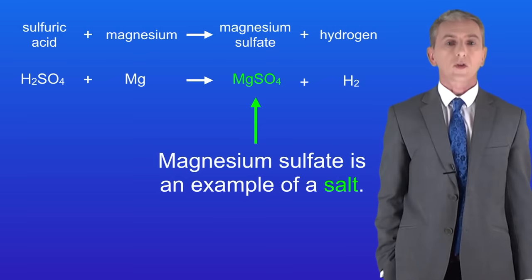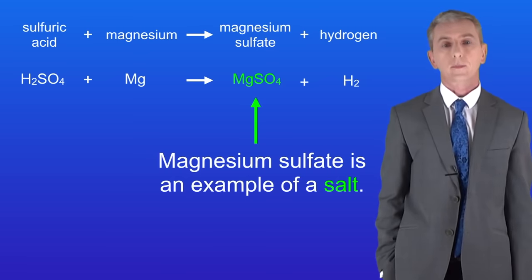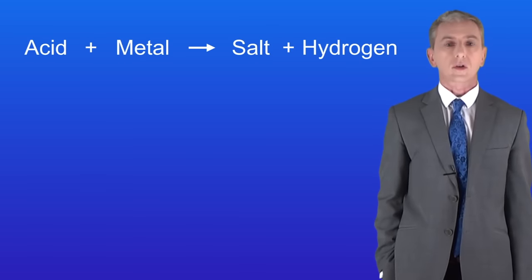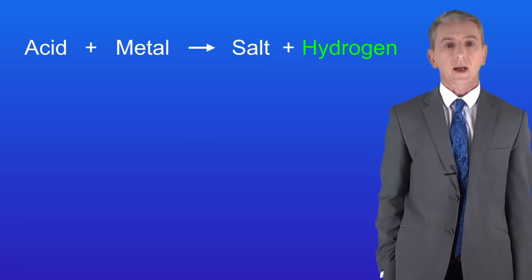Now scientists call substances such as magnesium sulfate a salt. So when acids react with metals we always make two products. These are a salt and hydrogen gas.